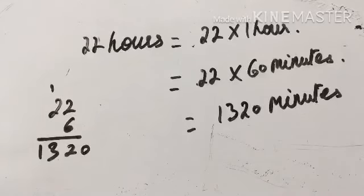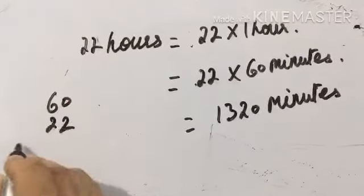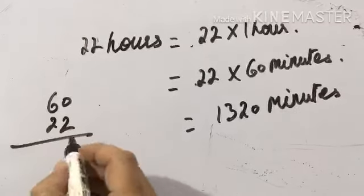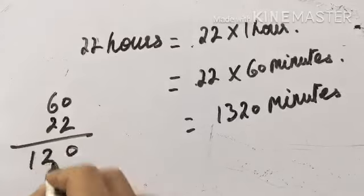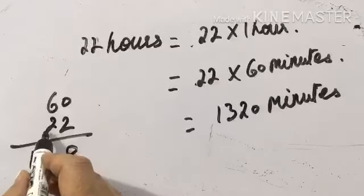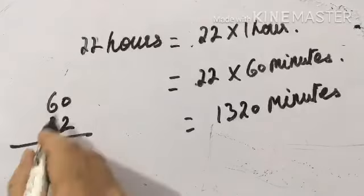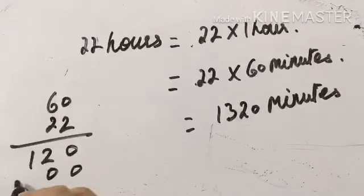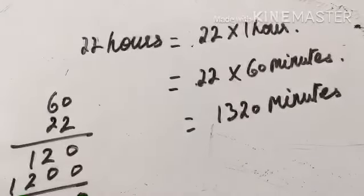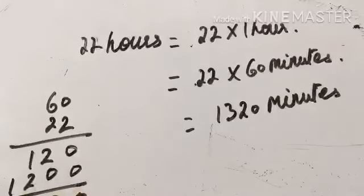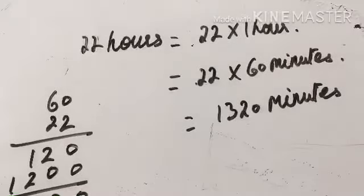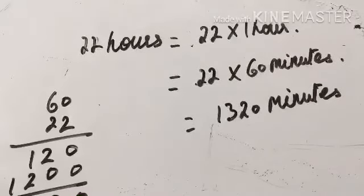You can also do normal multiplication. Write the bigger number on top and the smaller below. Two zeros are zero and two sixes are twelve. Then for the tens position, write a zero as placeholder: two zeros are zero and one six is six. Adding these gives us the same answer: 1320 minutes. I showed you both methods; use whichever you are comfortable with.